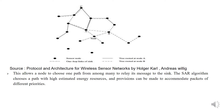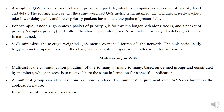The SAR algorithm chooses a path with high estimated energy resources, and provisions can be made to accommodate packets of different priorities. A weighted quality of service metric is used to handle prioritized packets, which is computed as a product of priority level and delay. The routing ensures that the same weighted QoS metric is maintained. Thus higher priority packets take lower delay paths, and lower priority packets use paths of greater delay. For example, if node C generates a packet of priority 3, it follows the longer path along tree B, and a packet of priority 5 will follow the shortest path along tree A, so that the priority-delay QoS metric is maintained. SAR minimizes the average weighted QoS metric over the lifetime of the network. The sink periodically triggers a metric update to reflect changes in available energy resources and transmission.